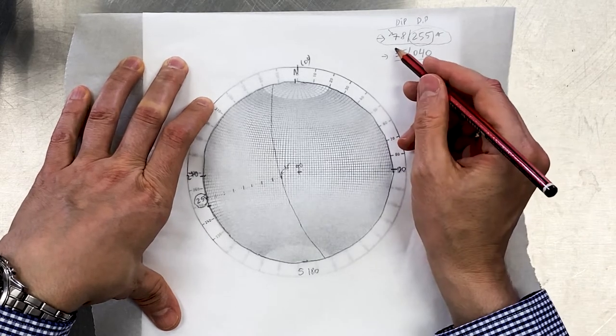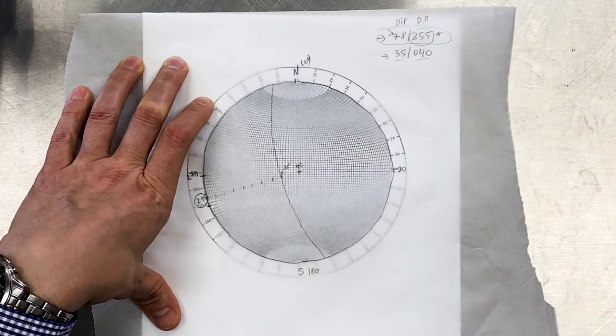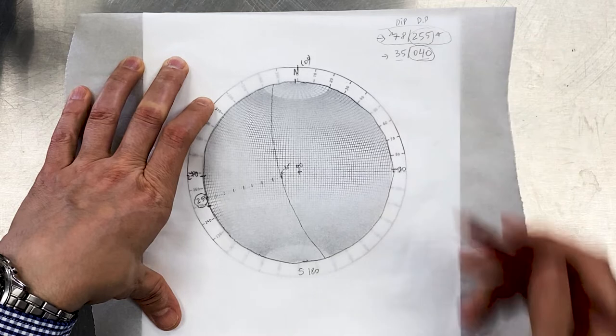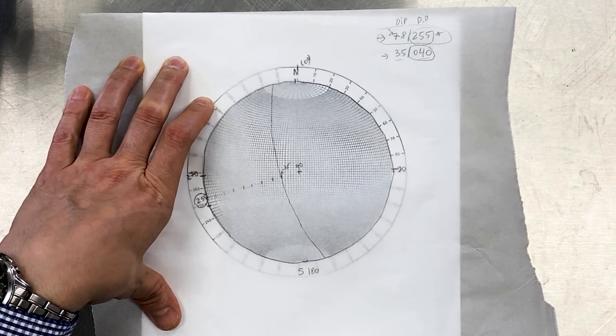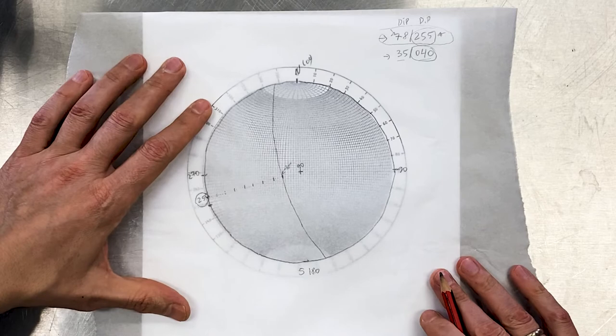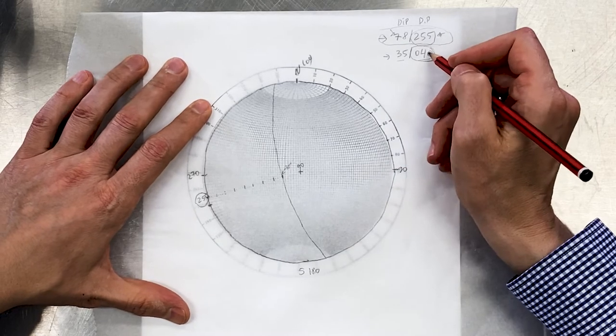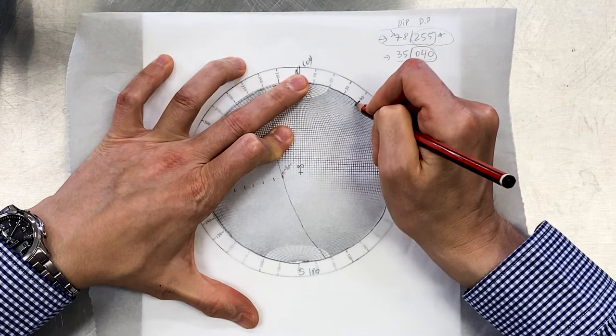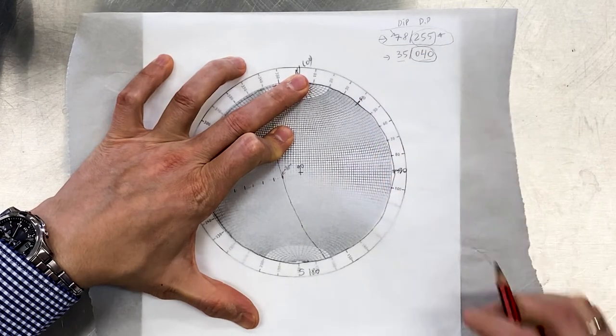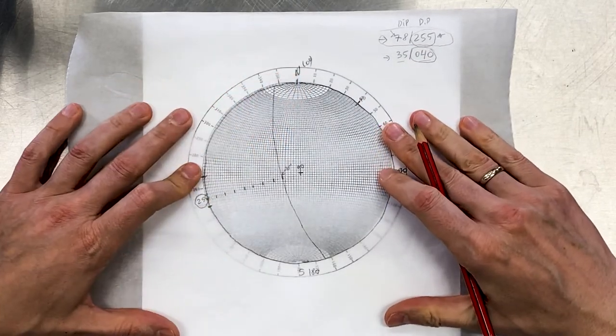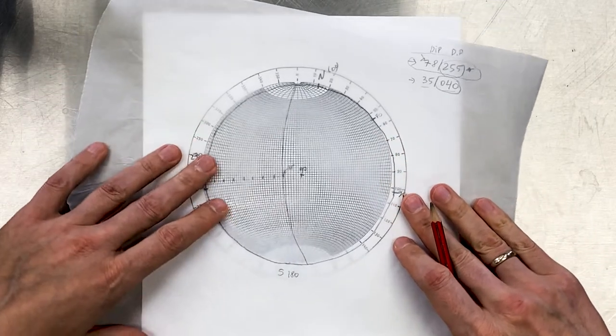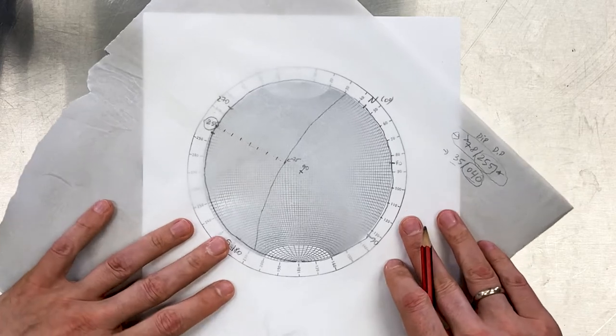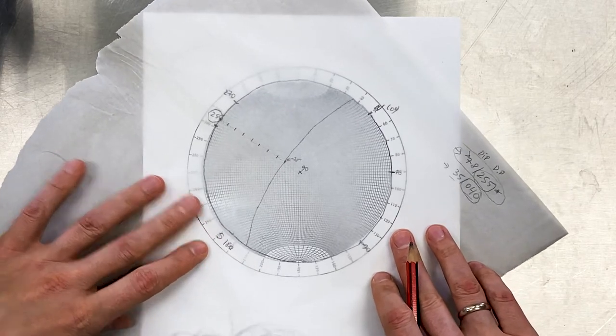Now let's practice again and do the second joint. This one has a dip direction of 40 and dip of 35. So again, what we do, we start with dip direction and here it's 40. Now we're going to rotate again to bring this point 40 and align it with the east-west straight line.